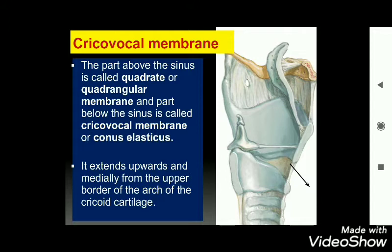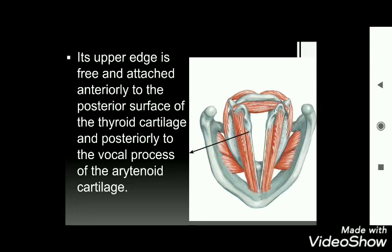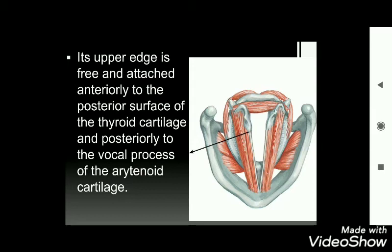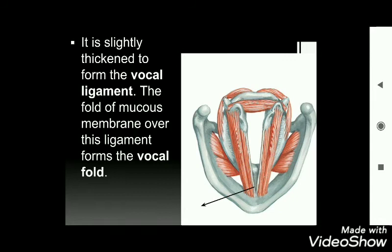The crico-vocal membrane runs posteriorly; its upper edge is free and attached anteriorly to the posterior surface of the thyroid cartilage. As shown in this sagittal section, it extends upward from the cricoid cartilage to the internal surface of the thyroid laminae, then runs posteriorly to reach the vocal process of the arytenoid cartilage.